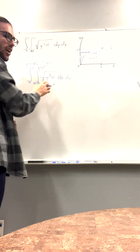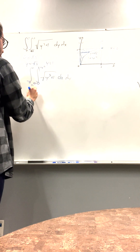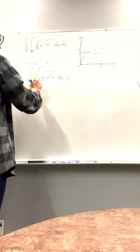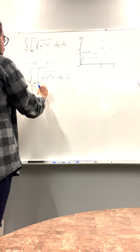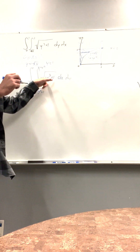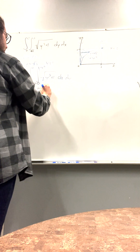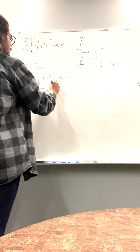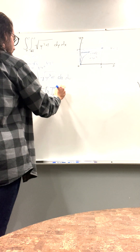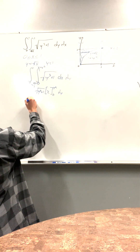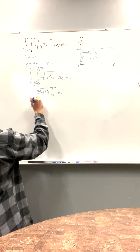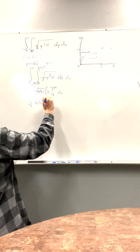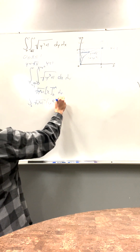Now we have a function we can actually start on. So we have 0 to 1, and we're going to evaluate the inner integral. The integrand is y to the third plus 1, which is a constant with respect to x, so we can bring it out. Because we're solving in terms of dx and this is only in terms of y, it's basically a constant. Then we have x evaluated from 0 to y squared dy, which gives us y squared minus 0.